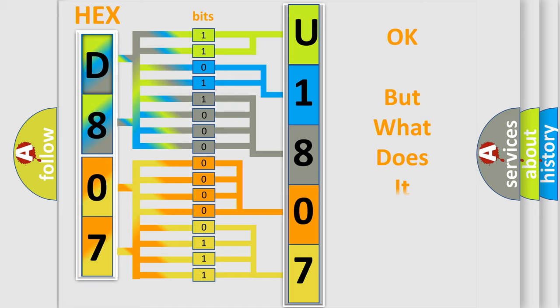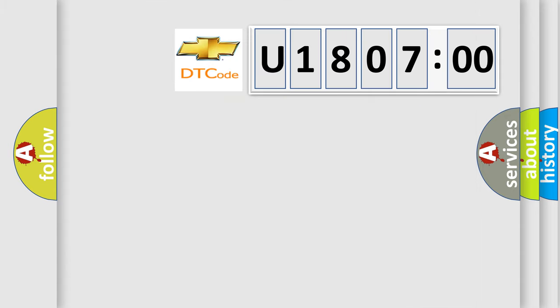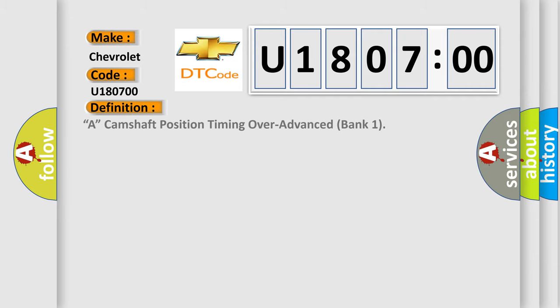We now know in what way the diagnostic tool translates the received information into a more comprehensible format. The number itself does not make sense to us if we cannot assign information about what it actually expresses. So, what does the diagnostic trouble code U180700 interpret specifically for Chevrolet car manufacturers? The basic definition is: camshaft position timing over-advanced, bank one.